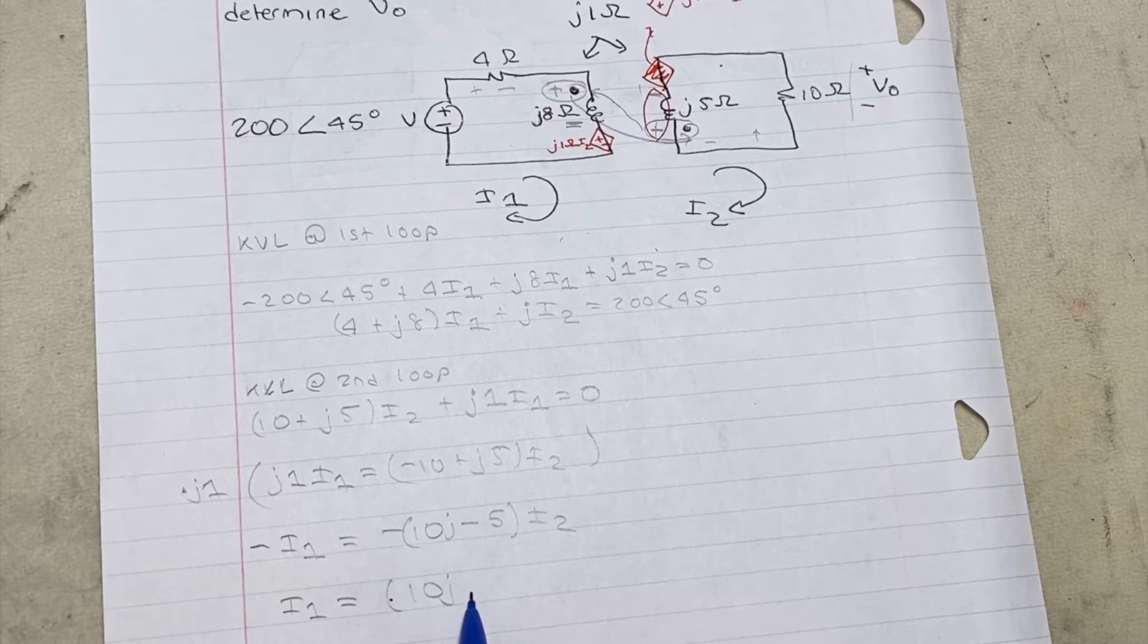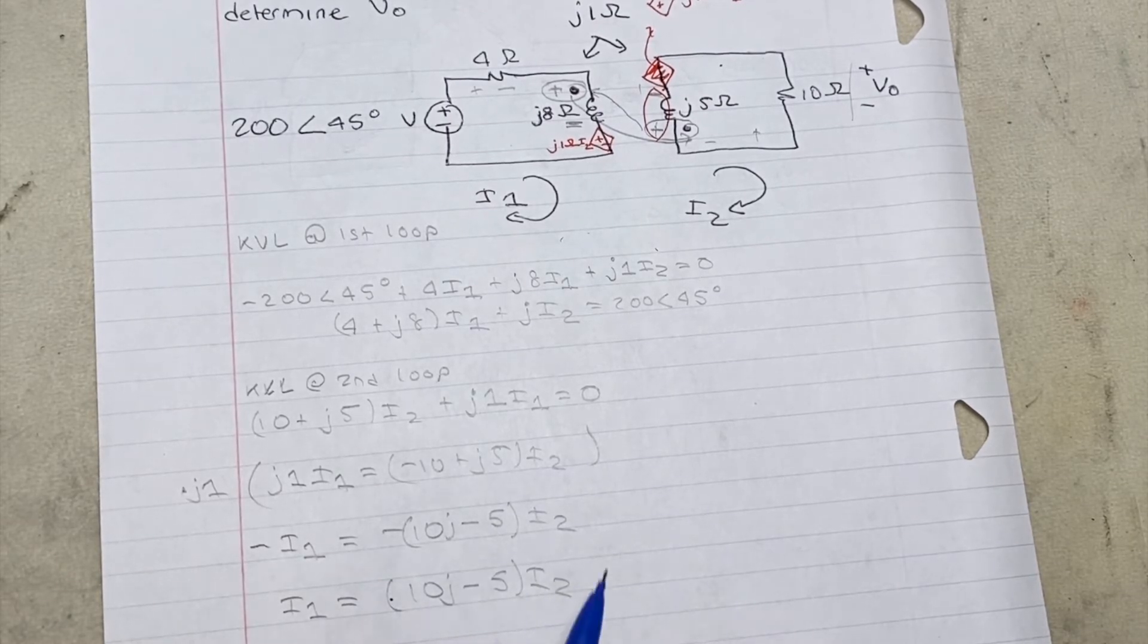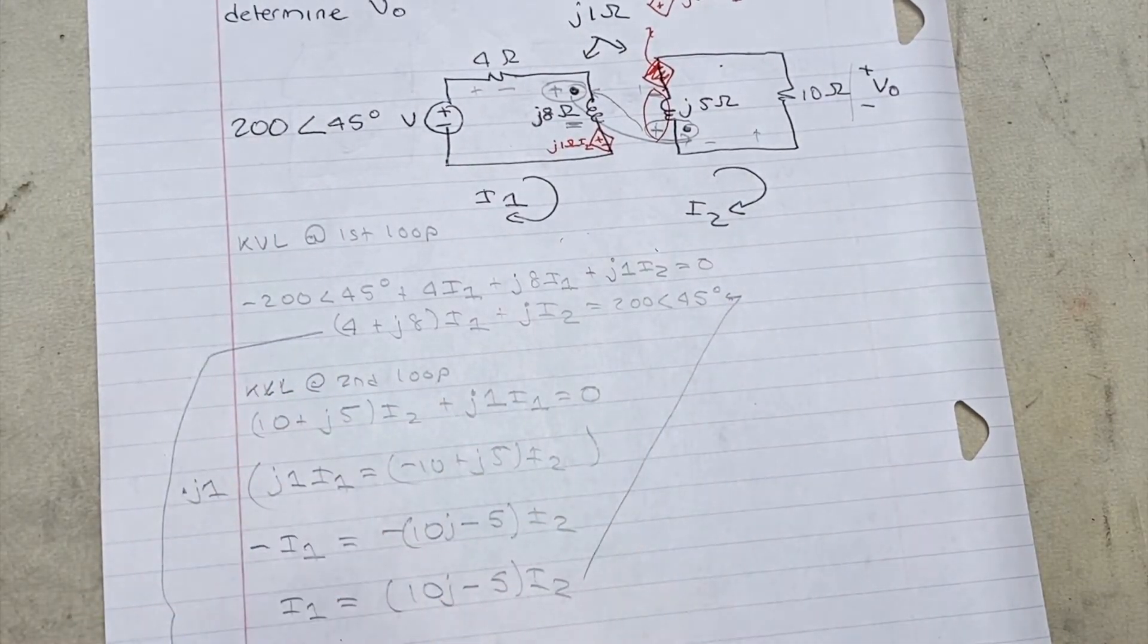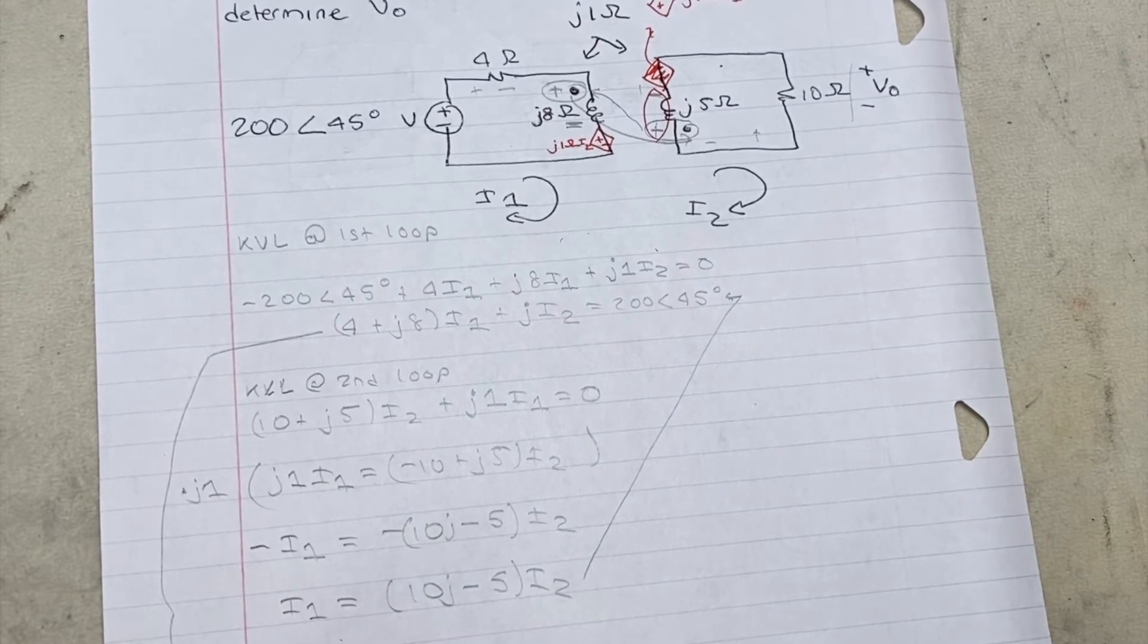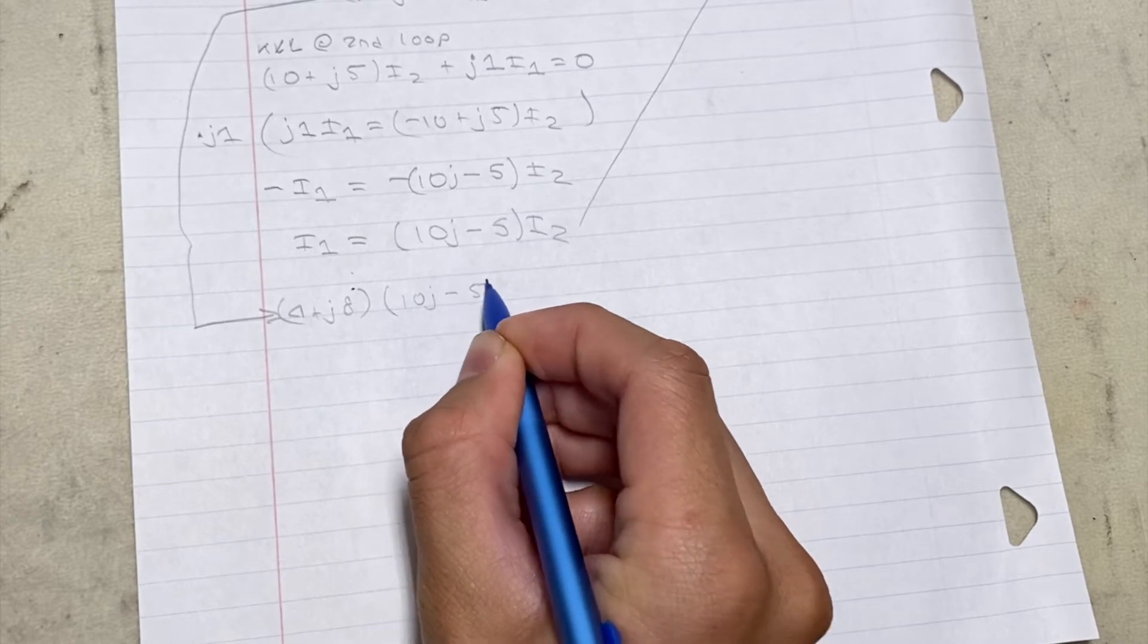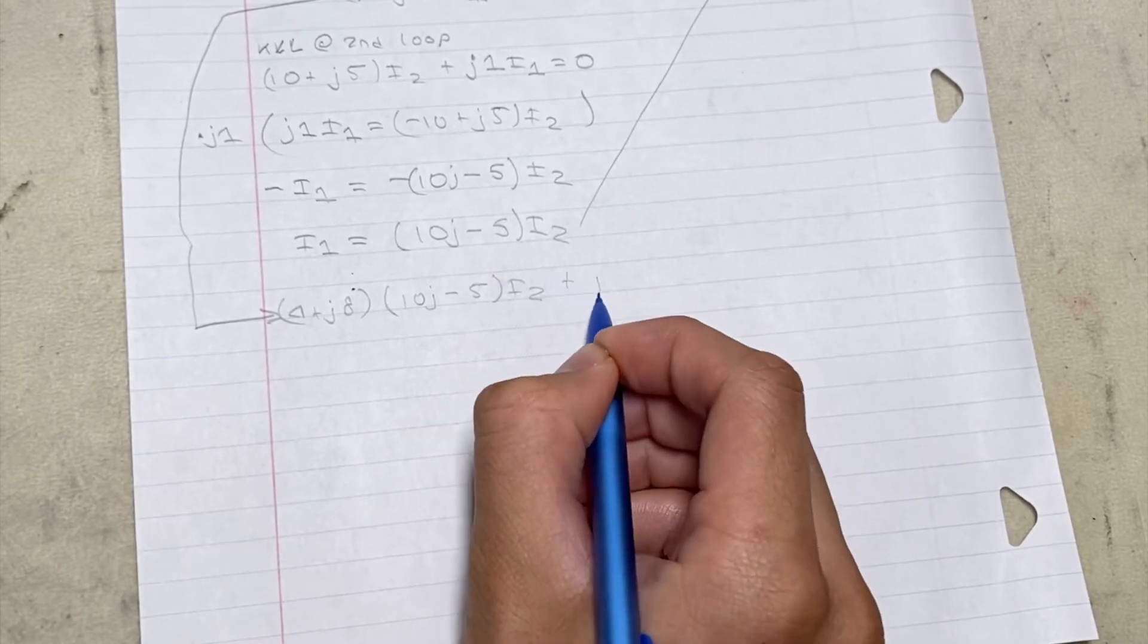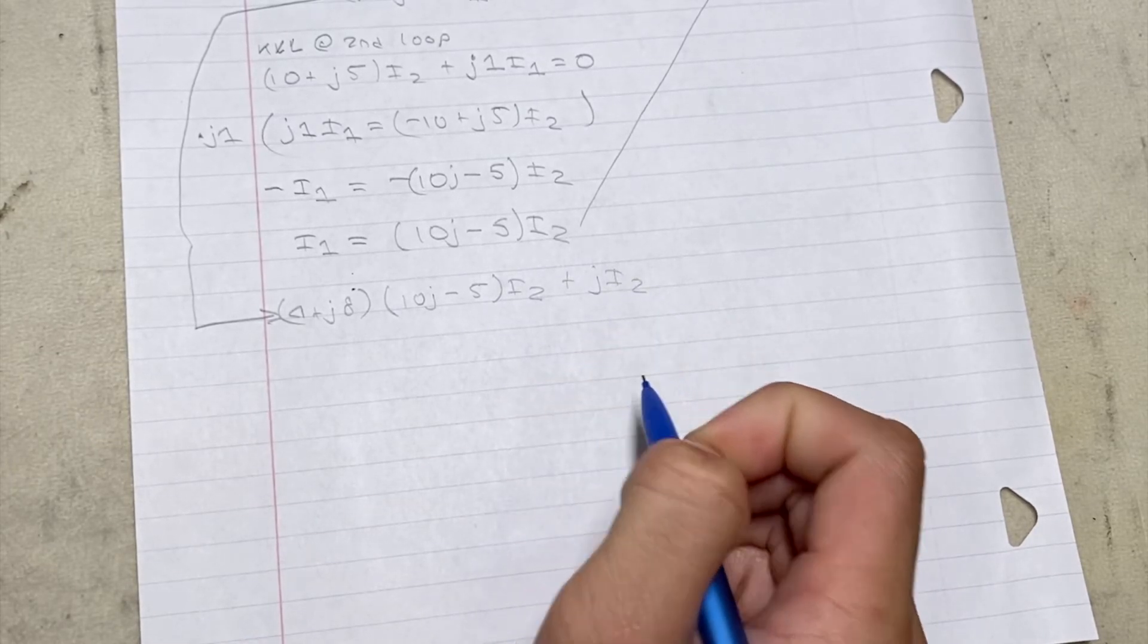Simplified I'll get I1 is equal to (10J - 5) times I2. Now I'm going to substitute my I1 value into the first KVL equation. When I substitute it in, I'm going to get (4 + J8) times (10J - 5) all times I2 plus JI2 is equal to 200 angle 45.